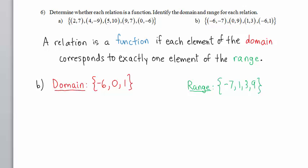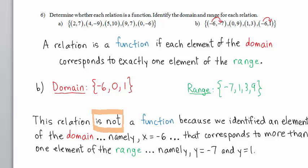Notice that the x-value negative 6 corresponds to the y-value negative 7, but the same x-value negative 6 from the domain also corresponds to a different, a second, y-value in the range. Thus, this relation is not a function because we identified an element of the domain, namely x equals negative 6, that corresponds to more than one element of the range, namely y equals negative 7 and y equals 1.